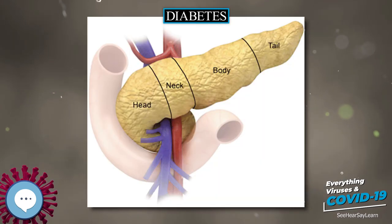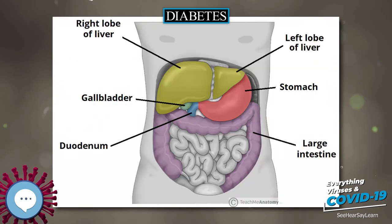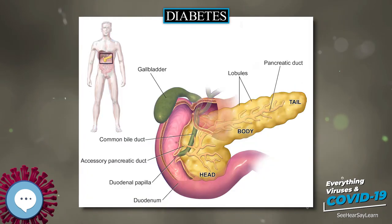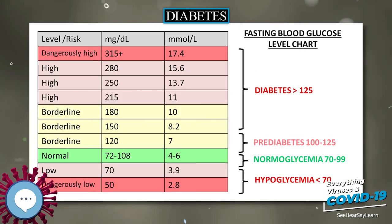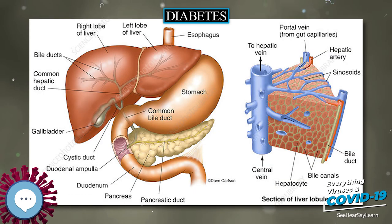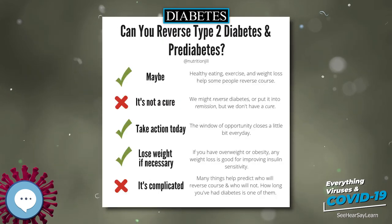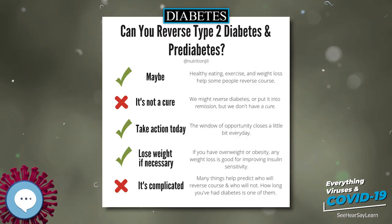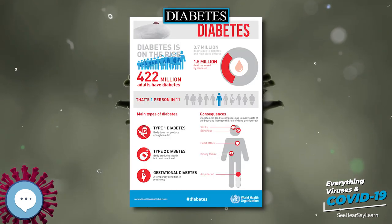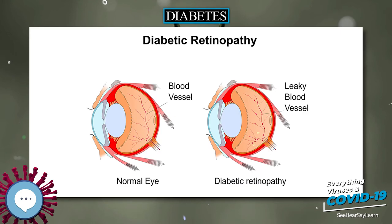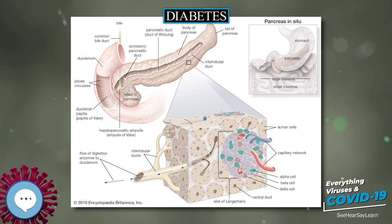Weight loss surgery in those with obesity and type 2 diabetes is often an effective measure. Many are able to maintain normal blood sugar levels with little or no medications following surgery, and long-term mortality is decreased. There is, however, a short-term mortality risk of less than 1% from the surgery. The body mass index cutoffs for when surgery is appropriate are not yet clear. It is recommended that this option be considered in those who are unable to get both their weight and blood sugar under control. A pancreas transplant is occasionally considered for people with type 1 diabetes who have severe complications of their disease, including end-stage kidney disease requiring kidney transplantation.